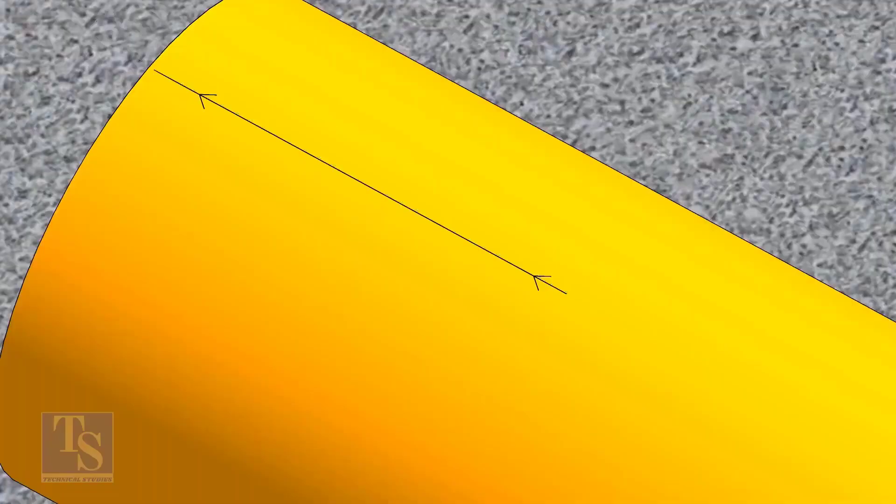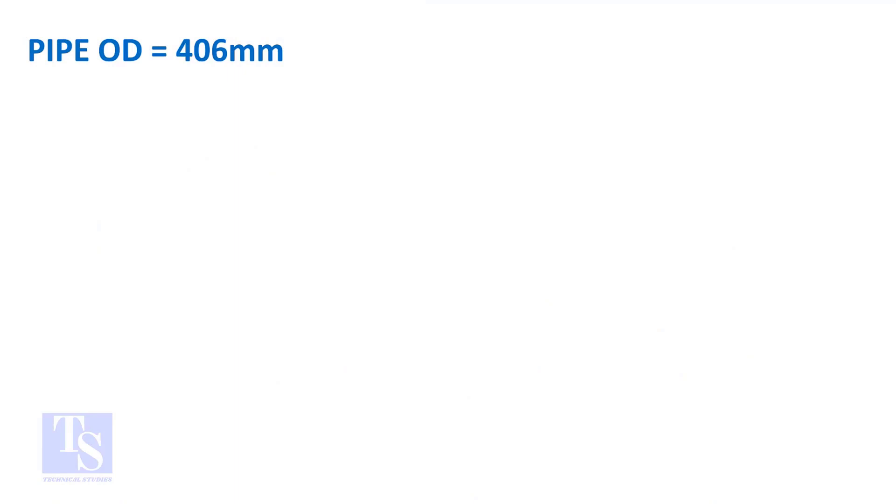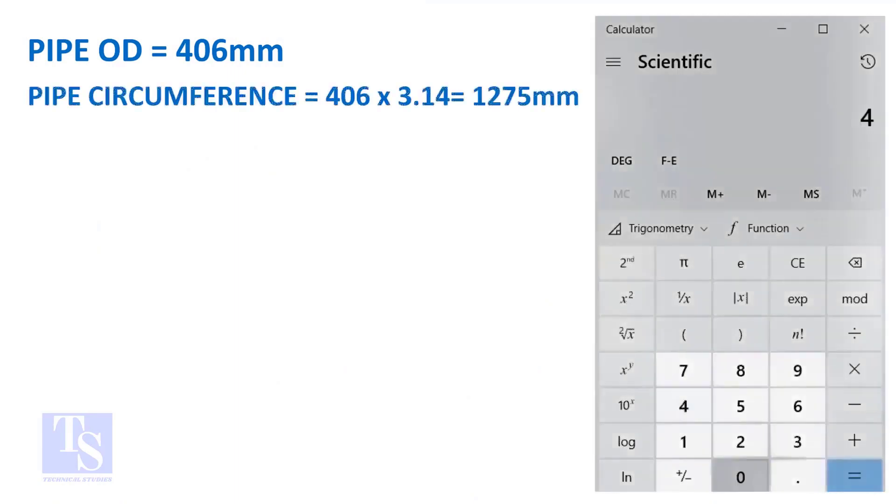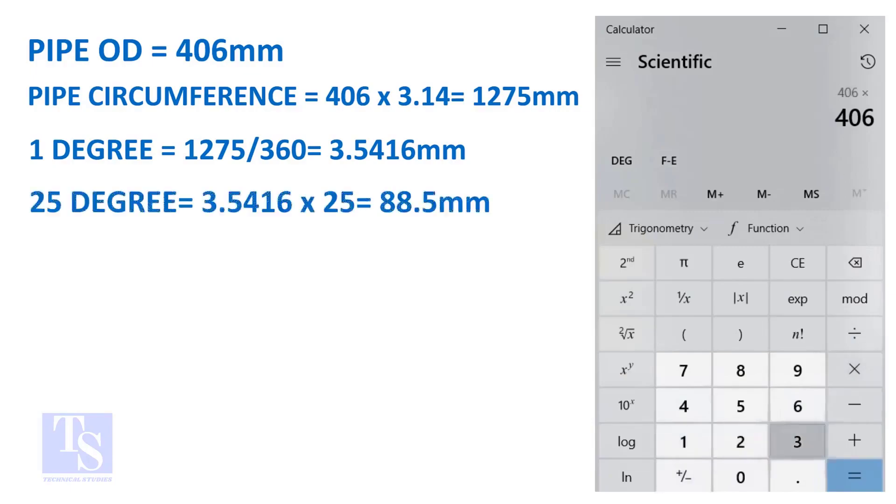Let us calculate the circumferential distance or arc length for 25 degrees. Multiply the OD by 3.14. You will get the circumference of the pipe. Divide the circumference by 360, you will get the arc length of 1 degree. And finally, multiply the 1 degree arc length by 25. Now you have the arc length of 25 degrees. You can apply this formula to get the arc length of any degree.